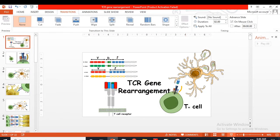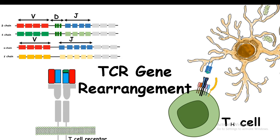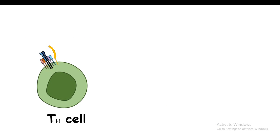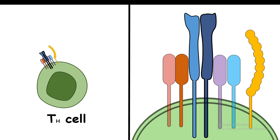Hi, in this video we are going to talk about the T cell receptor gene rearrangement. Here is a T helper cell which has its own T cell receptor and its coreceptor CD4. For T helper cells, the coreceptor is CD4, or for cytotoxic T cells, the coreceptor is CD8. But our focus is TCR today, not the coreceptor.